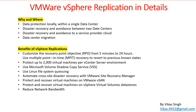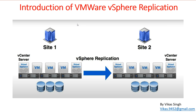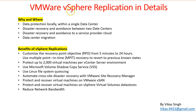There are several use cases for VMware replication. The first is local data protection within a single data center — for example, site A and site B could be in the same organization with building one and building two. You can replicate your VMware infrastructure from building one to building two, so if anything goes wrong with building one, everything is already set up and ready on building two.